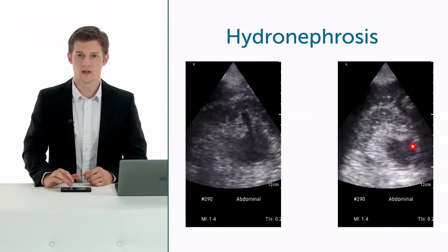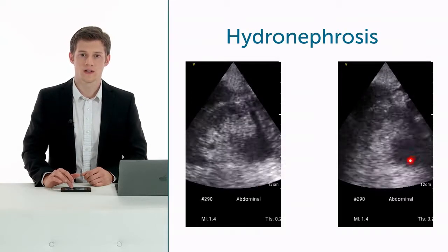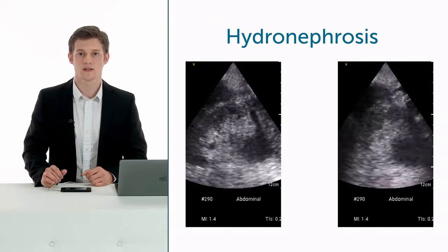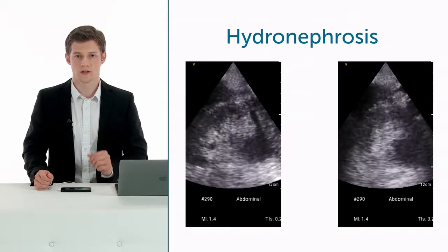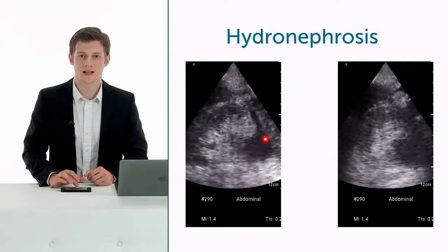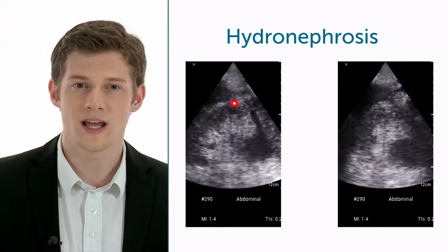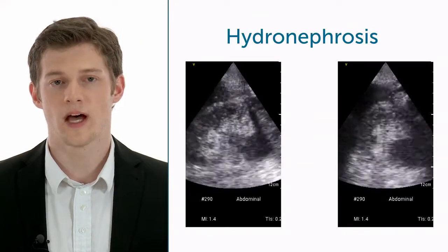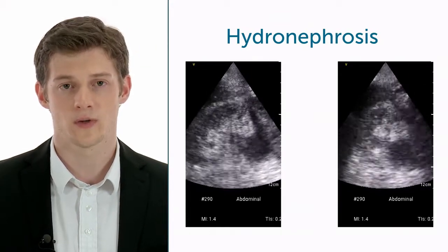Here is the transverse view of the kidney. Here you see dilated renal pelvis and renal calyces. I would have said grade 2 hydronephrosis. But if you take a look at this longitudinal view, you see again the dilatation of the renal pelvis and the calyces, but also a narrowing of the renal parenchyma. This is grade 2 to 3 hydronephrosis. I graded it like that and described the renal parenchyma.